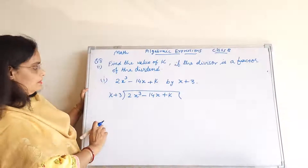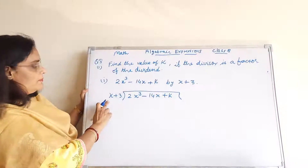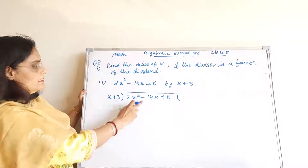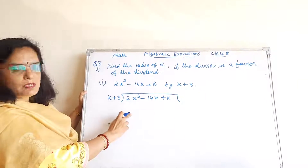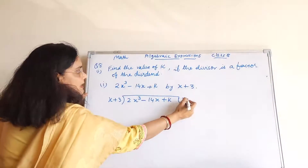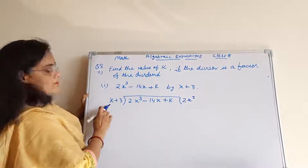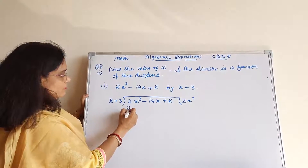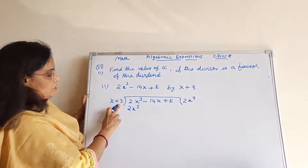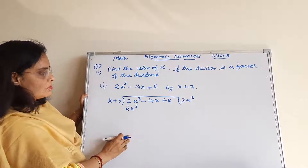Toh isko hum solve karte hain. Yahan pe 2X cube hai, toh quotient mein hum 2X square likhenge, because 2X square multiplied by X will give 2X cube. Ab yeh hai 3, plus 3 multiplied by 2X square.